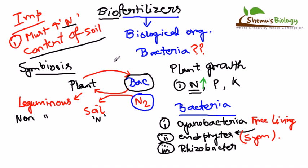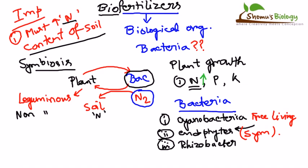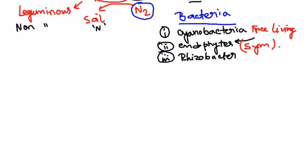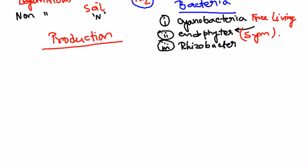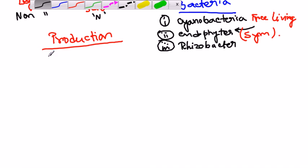Let's look at the production of biofertilizer. The major pathways of production are similar for all these types of bacteria, though cyanobacterial biofertilizer production is slightly different. The first step is to produce our source — the starter culture. For example, if we want to produce a fertilizer with cyanobacteria, we need a starter culture of cyanobacteria in a test tube.